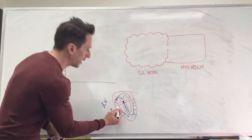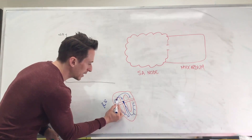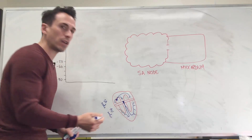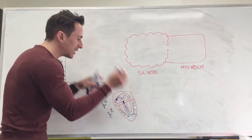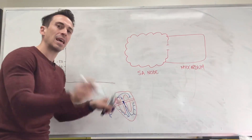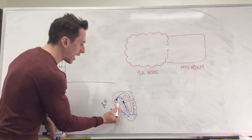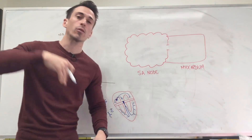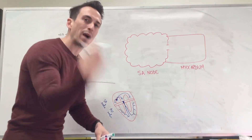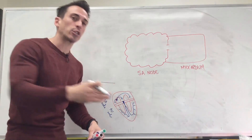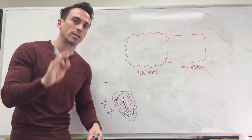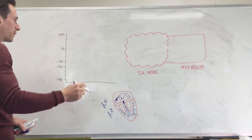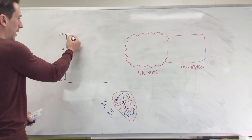So what we're talking about today is the SA node and the AV node — how do they send their electrical signals? If I said the SA node spontaneously depolarizes, it just basically stimulates this action potential all by itself, how does it do it? Well, let's have a look.